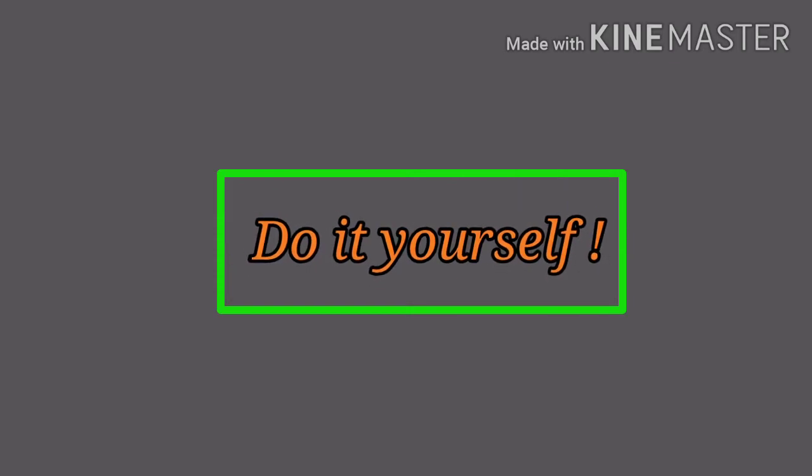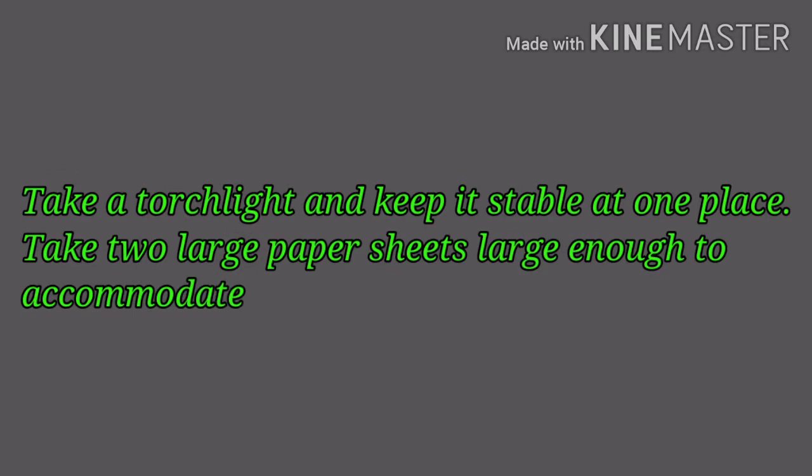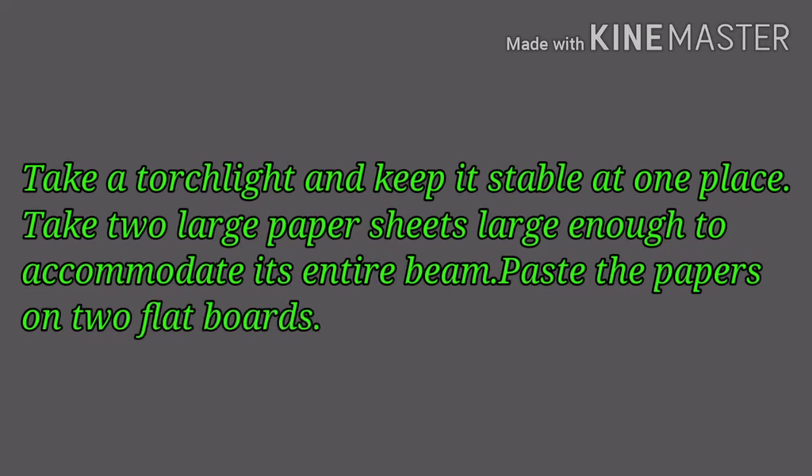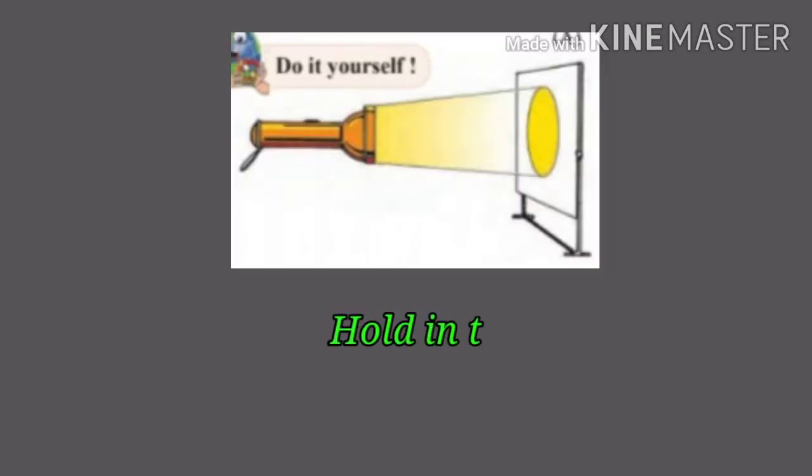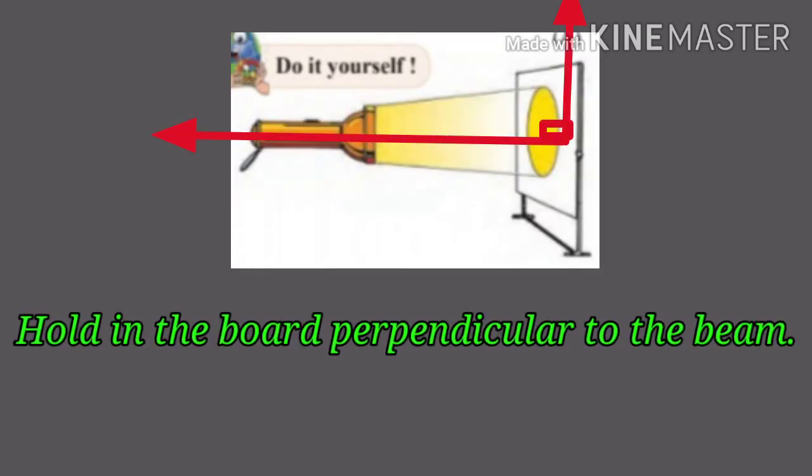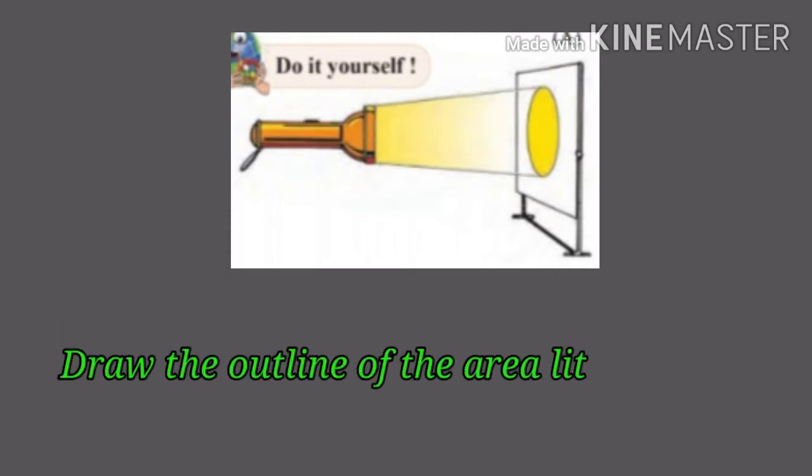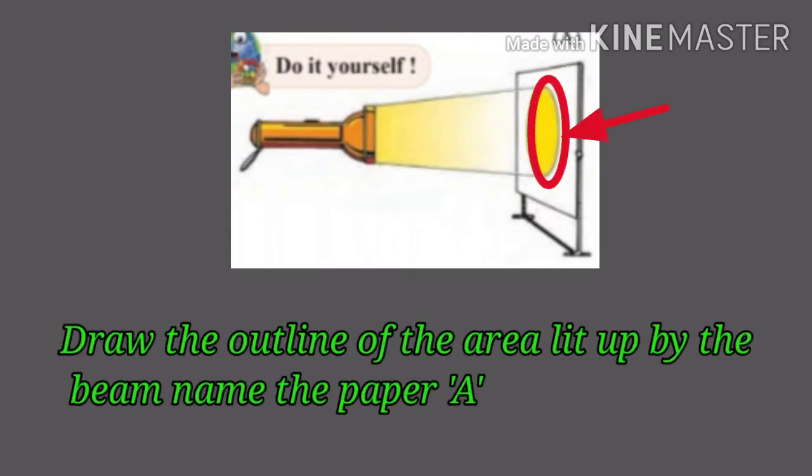Do it yourself: Take a torch light and keep it stable at one place. Take two large paper sheets, large enough to accommodate its entire beam. Paste the papers on two flat boards. Hold the board perpendicular to the beam, which is shown in Figure A. Draw the outline of the area lit up by the beam. Name the paper as A.